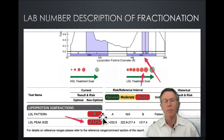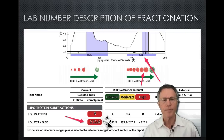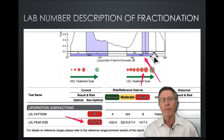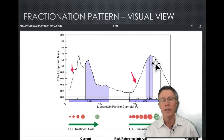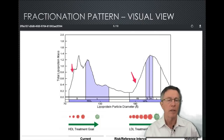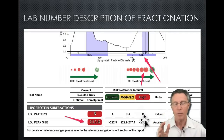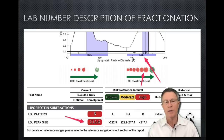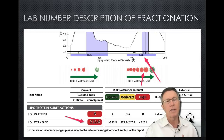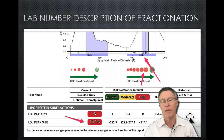Underneath that you have some numbers for those who prefer to look at data rather than images. This person has what's called a B pattern — it doesn't peak at the largest size, peaking a bit lower instead. I get many patients who come to me saying they have a B pattern and are worried about it. My advice is to set the B pattern and the whole fractionation focus aside and focus on our real priorities.